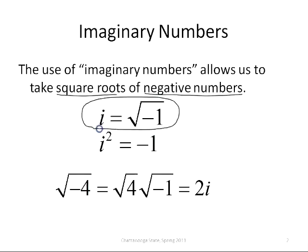This little lowercase i, usually written in italics, is actually not a variable, but it is a number. It is an imaginary number that represents the square root of negative 1. So if i represents the square root of negative 1, then if you square it, squaring it will just take away the radical, so i squared will be equal to negative 1.